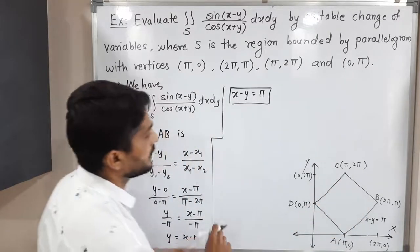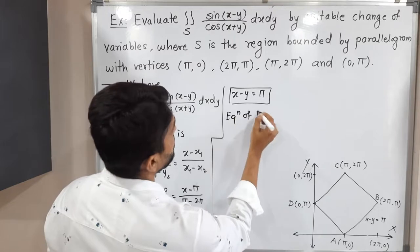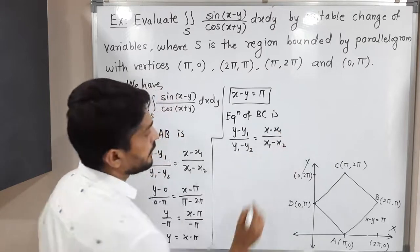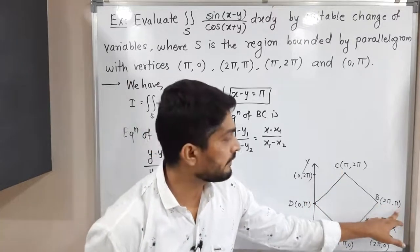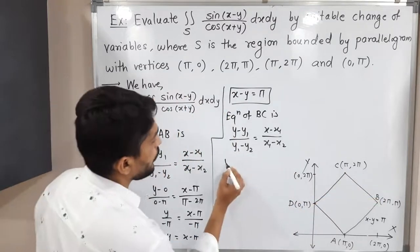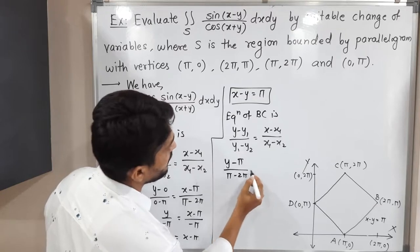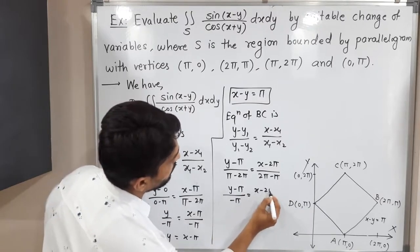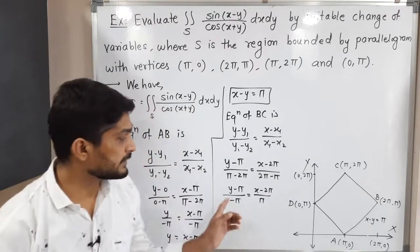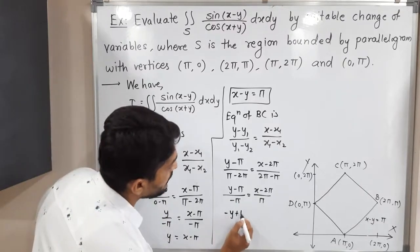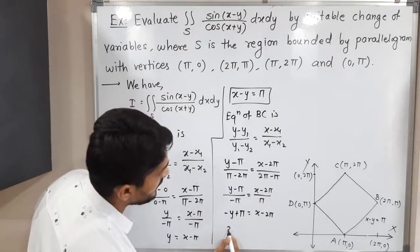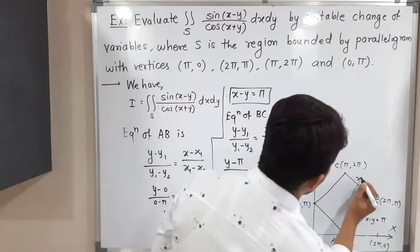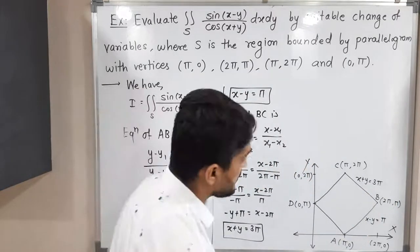Now for line BC, using the same formula with B = (2π, π) and C = (π, 2π): (y − π)/(π − 2π) = (x − 2π)/(2π − π), which simplifies to (y − π)/(−π) = (x − 2π)/π. The π cancels, and rearranging gives −y + π = x − 2π, so x + y = 3π is the equation of line BC.